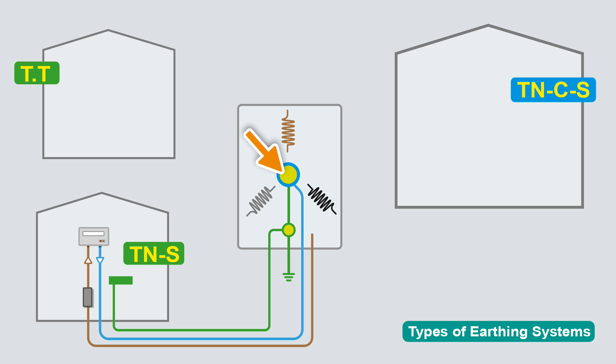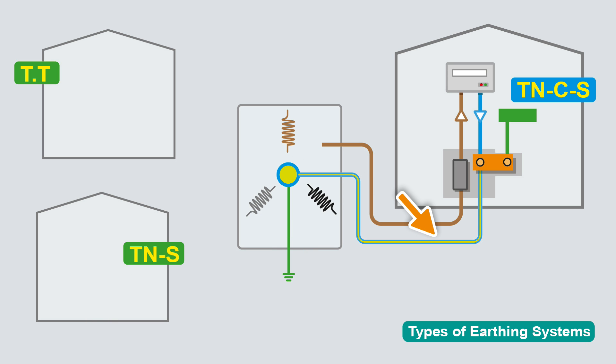Now with the TNCS, the distribution companies, they give you a live and a neutral, but they don't run a separate protective conductor because ultimately back at the transformer, the protective conductor and the neutral are combined. They thought it'd be a good idea and a bit cheaper to combine them all the way through until it gets to the installation. So the neutral and the protective conductor are the same conductor. It's known as PEN, the PEN conductor, protective earth neutral, or a CNE conductor, combined neutral and earth. So it's combined until it gets to the property.